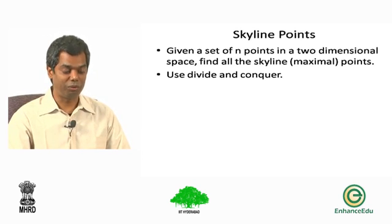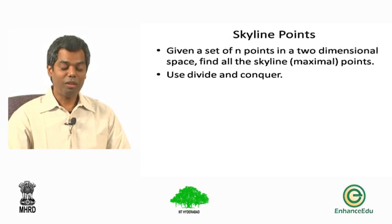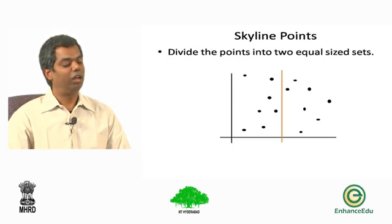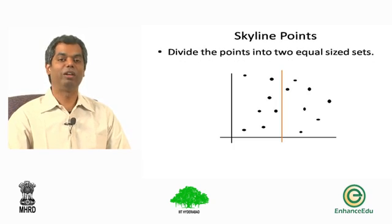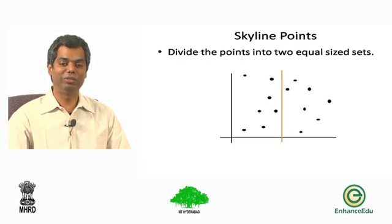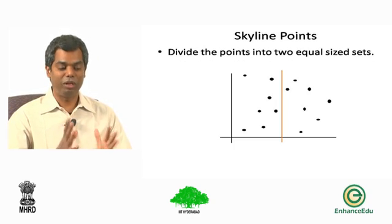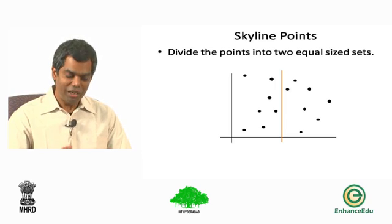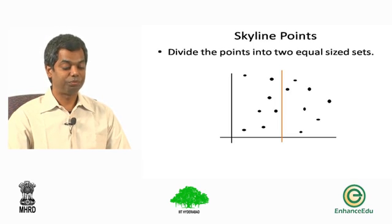So we will go through a pictorial representation and pictorial description of the algorithm. As usual with most divide and conquer things, the first thing we could do is see what happens when we divide the points into two equal-sized sets. Let us imagine that we take all the x-coordinates of these points, compute their median value.